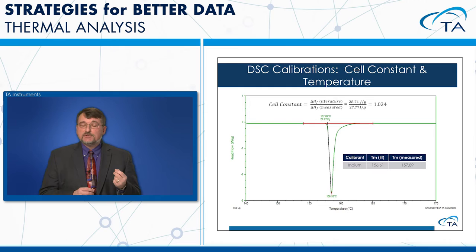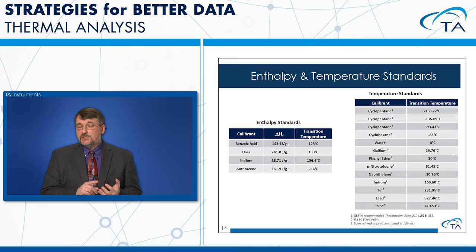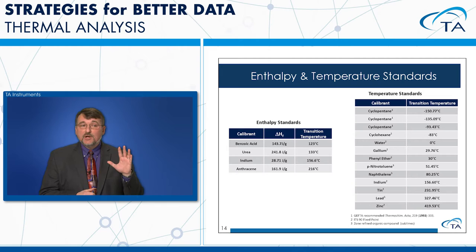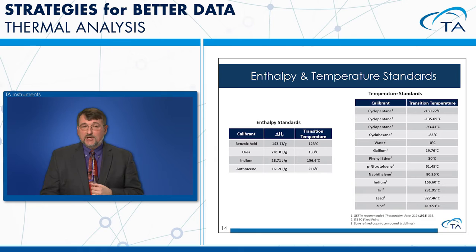You don't have to use indium — benzoic acid and urea are also common options, though indium is the most popular for cell constant calibration. For temperature calibration, up to five points can be used. We typically use metal standards like indium, tin, lead, or zinc, though many other materials are available as shown on the slide.